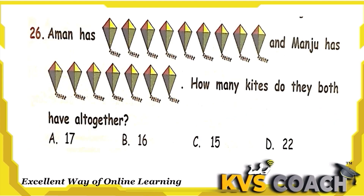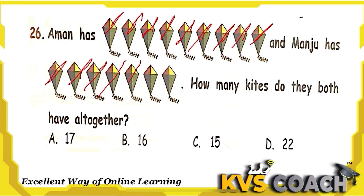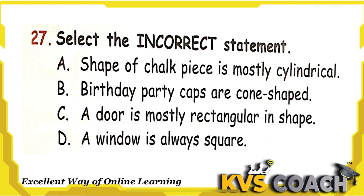The next question: Aman has some kites and Manju has some kites. How many kites do they both have altogether? Counting all kites: 1, 2, 3, 4, 5, 6, 7, 8, 9, 10, 11, 12, 13, 14, 15, 16. Option B is the right answer.